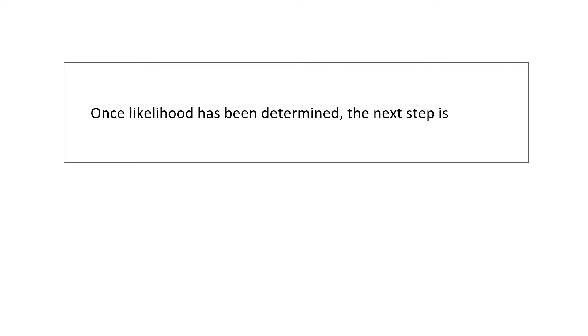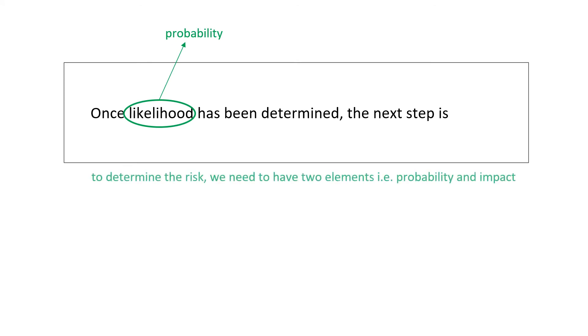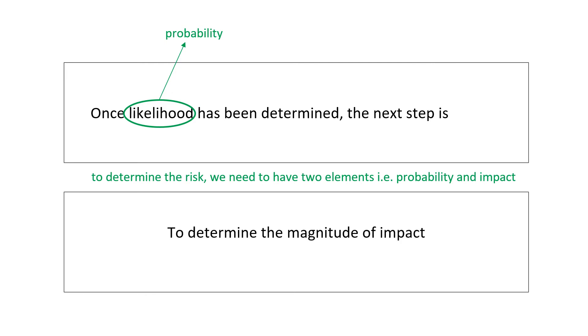Once the likelihood has been determined, what should be the next step? Likelihood means probability. To determine the risk, we need two elements — probability and impact — so the next step is to determine the magnitude of the impact.